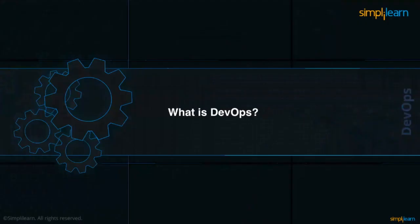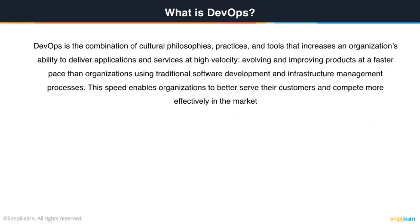Let's first try and understand what exactly DevOps is. As per the definition given on the internet, it is a combination of cultural philosophies, practices, and tools that increases an organization's ability to deliver applications and services at high velocity. High velocity is the key word here.